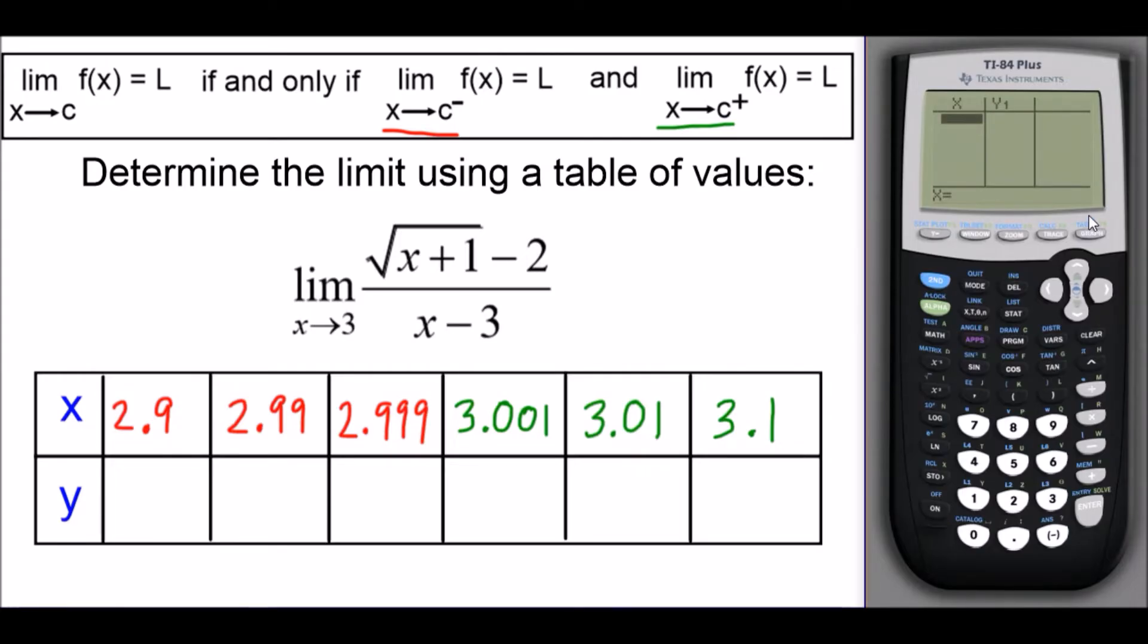If we want to find out what y is when x is 2.9, we just type it in and press enter. If we type in 2.99 and hit enter, it'll give us the next y value. And we complete this for the rest of the table: 2.999, 3.001, 3.01, and 3.1.